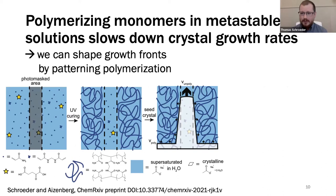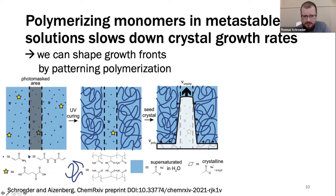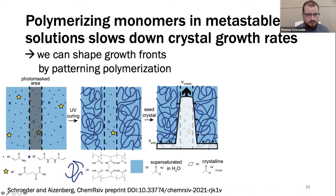We start with a supersaturated solution of sodium acetate in water that also contains acrylamide monomers, bisacrylamide as a crosslinker, and a photo-initiator — in this case alpha-ketoglutaric acid. I take this solution and expose it to UV light under a mask. Certain areas are protected from UV exposure, and everywhere else polymerization takes place, leaving a hydrogel with channels in it that are unpolymerized. When I nucleate the crystallization process within this milieu, crystal growth proceeds rapidly through the masked areas I've made.